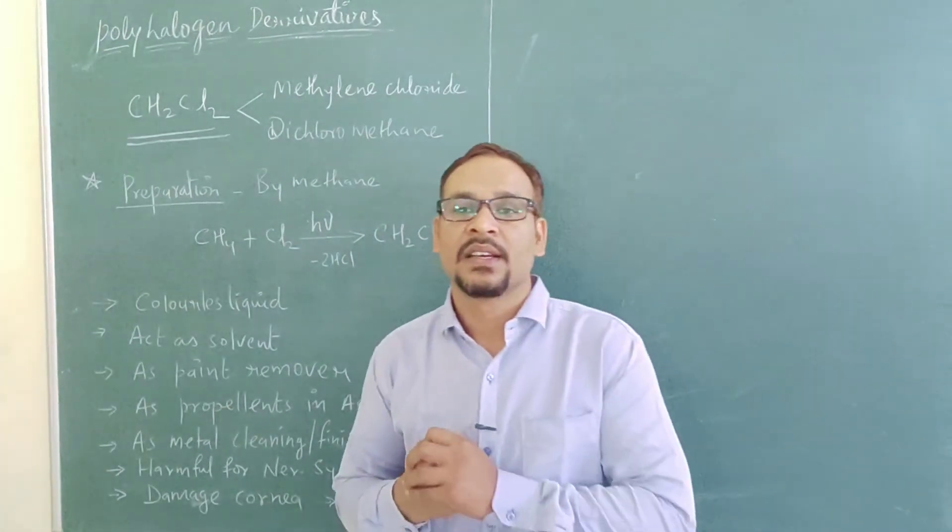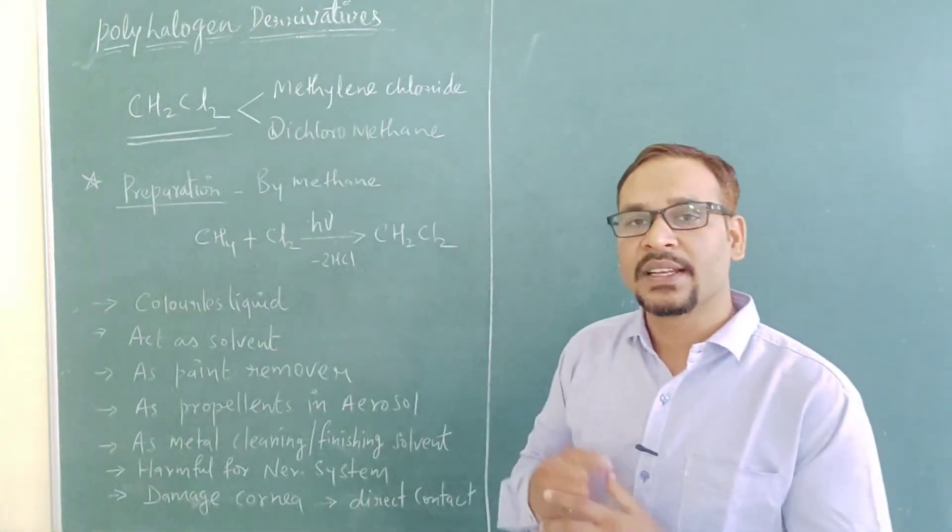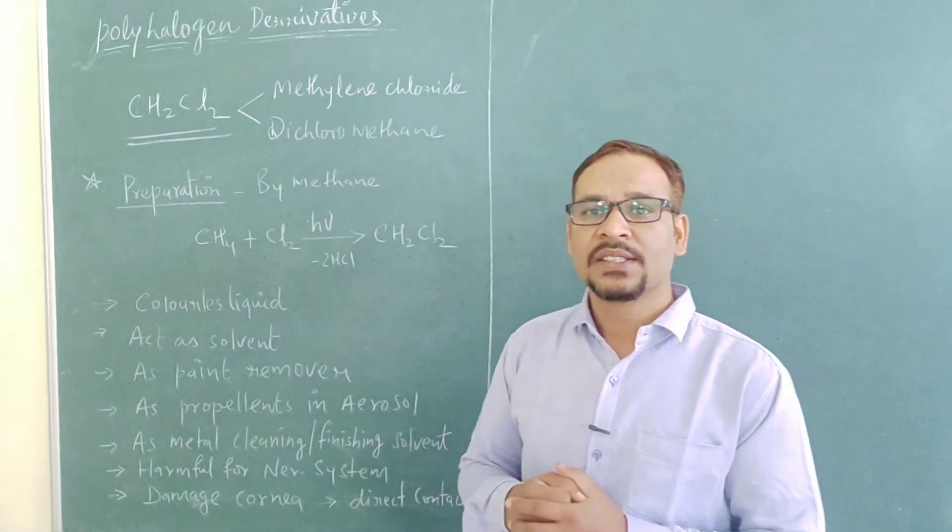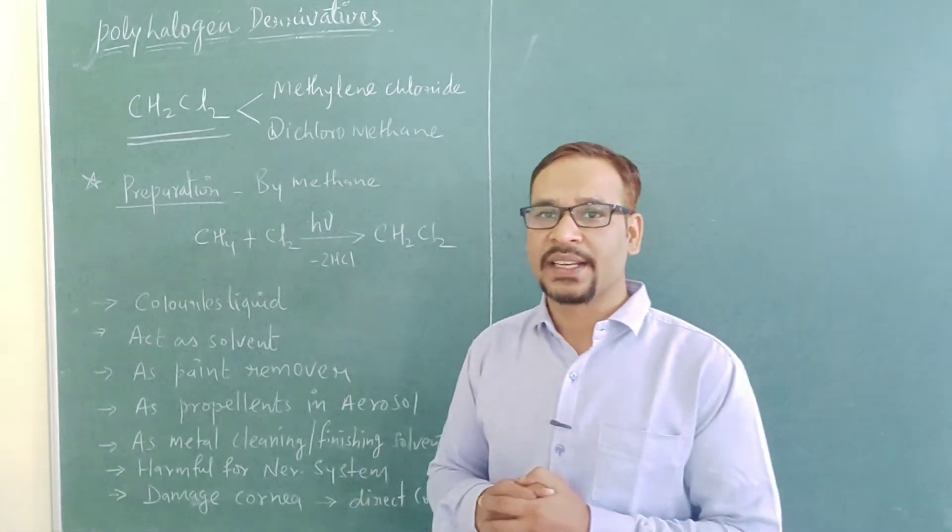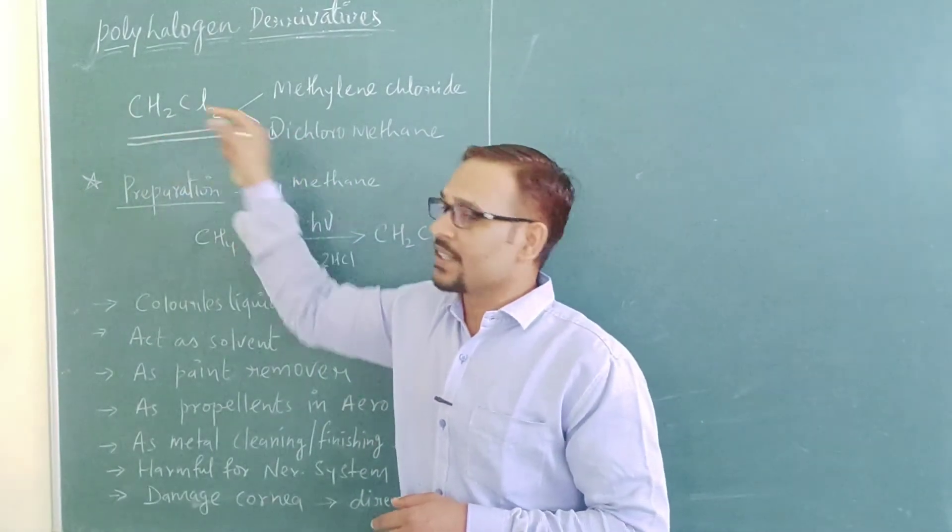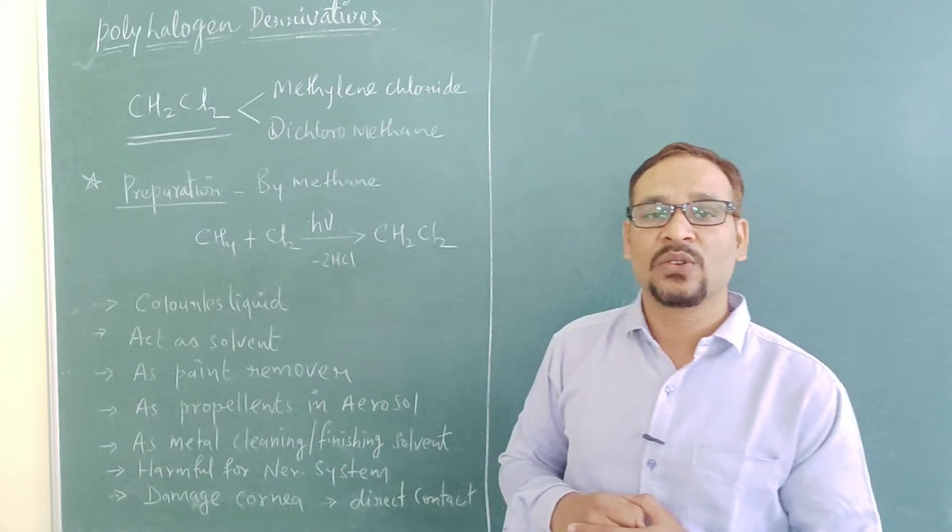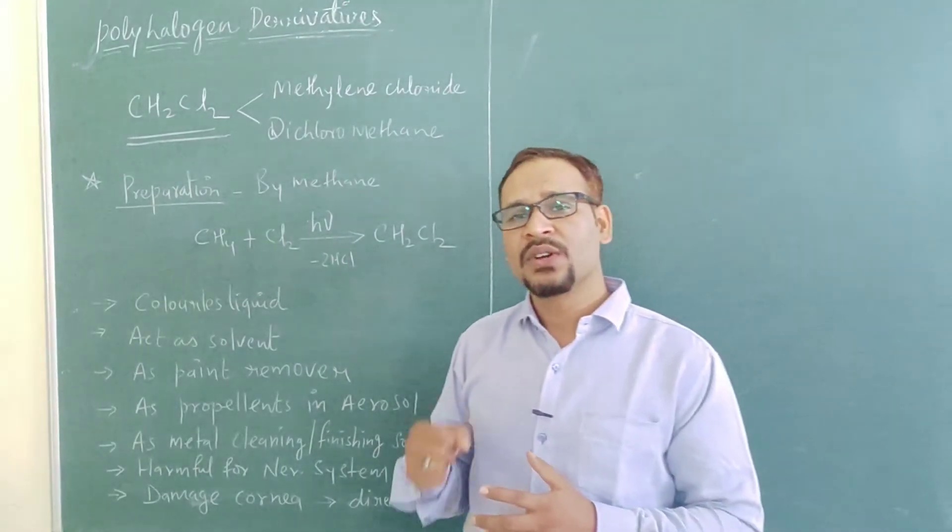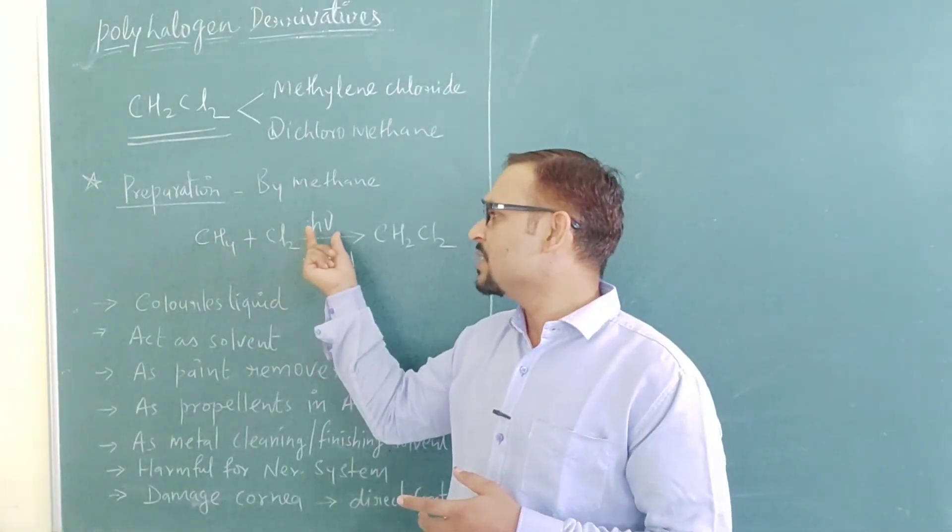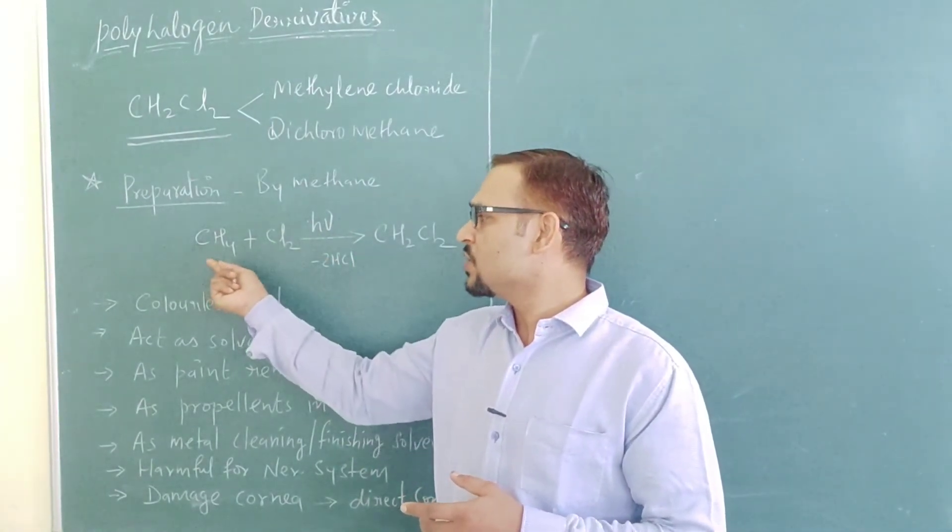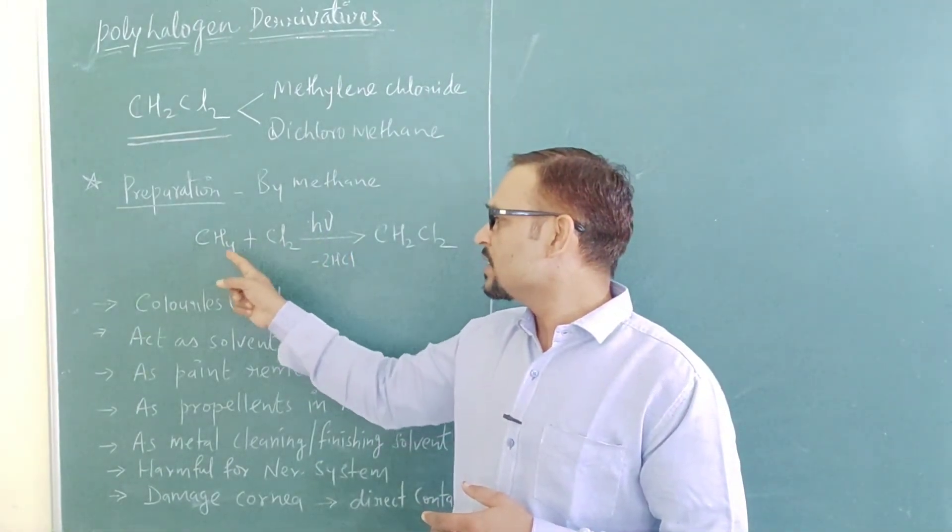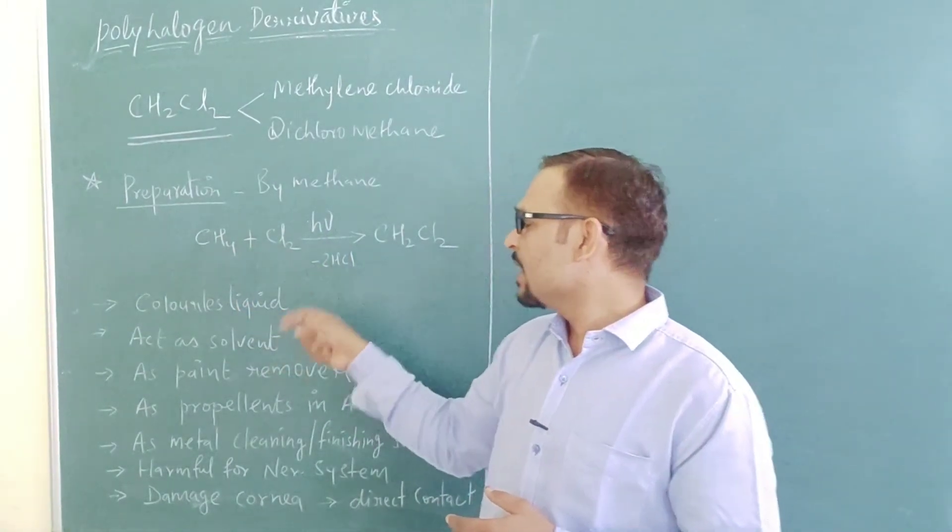So students, let's talk about another halogen derivative compound, that is CH2Cl2, methylene chloride, also called dichloromethane. Its IUPAC name is dichloromethane. How is it prepared? It is prepared by methane only. When we do the halogenation in presence of sunlight, halogenation of methane in presence of sunlight, two hydrogens are replaced by two chlorine atoms and forming dichloromethane.